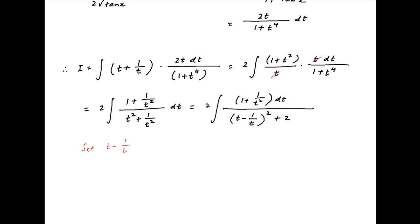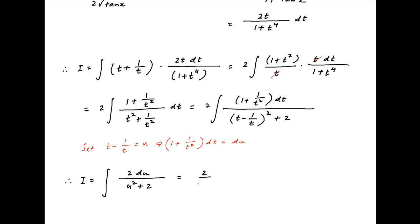Now set t minus 1 upon t in the denominator equal to u. Differentiating both sides we get 1 plus 1 upon t squared times dt is equal to du. Therefore the value of i can be written as the integral of 2 times du divided by u squared plus 2. This is a standard integral and the value of i is therefore 2 upon root 2 times tan inverse of u upon root 2, plus the constant of integration.